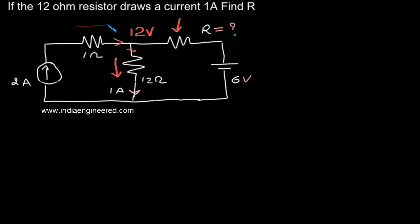Now, 2 ampere flows in this direction. From that, 1 ampere flows downwards, which makes it clear that 1 ampere flows in this direction.